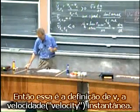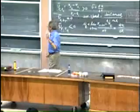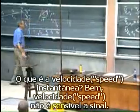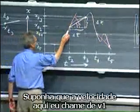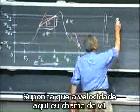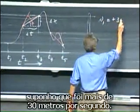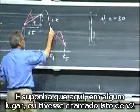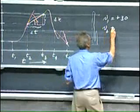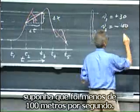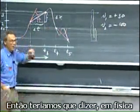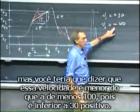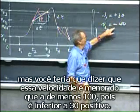What is the instantaneous speed? Speed is not sign-sensitive. Suppose that the velocity here I call v1 was plus 30 meters per second — I just grabbed this number out of the blue. And suppose somewhere else it was v2, minus 100 meters per second. This is negative and this is positive. Then we would have to say in physics, whether you like it or not, that this velocity is lower than that one, because minus 100 is lower than plus 30.